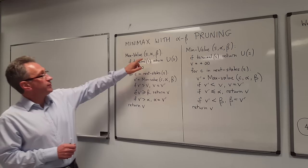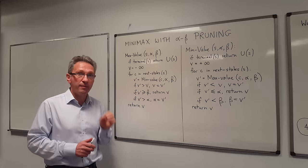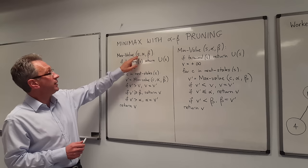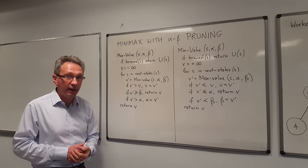For each of these we have three parameters: a state — that's the state of the game as it is now — we have an alpha value, that's the best alternative for Max on this particular path through the tree, so from the root node to S, alpha is the best alternative for the Max player. Similarly, beta is the best alternative for the Min player, and we can use that information in order to prune the search.